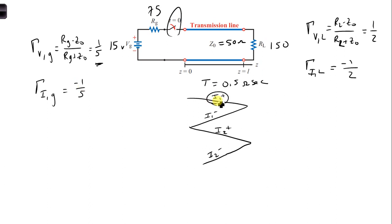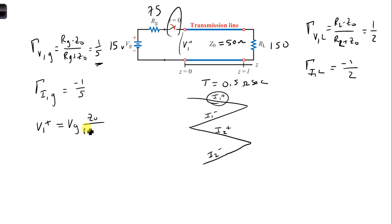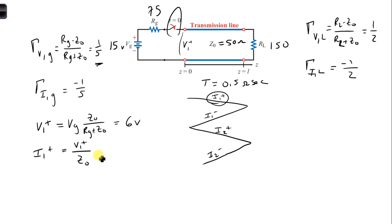Now, in order to get I1 plus, we need to know what V1 plus is. To get V1 plus, we need to perform a voltage divider at the generator. So V1 plus equals VG times Z naught over RG plus Z naught. Plugging in our numbers, we get 6 volts. From this, we can get I1 plus, which equals V1 plus over Z naught, and we get 0.12 amps.